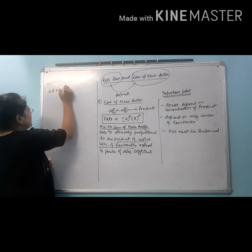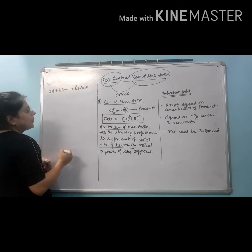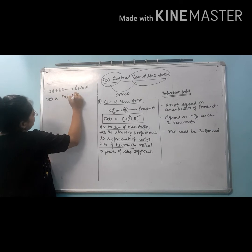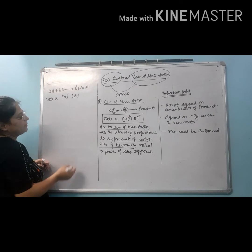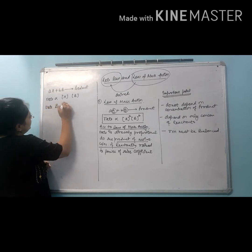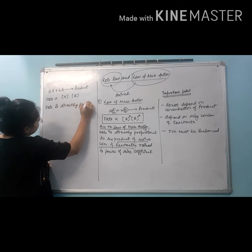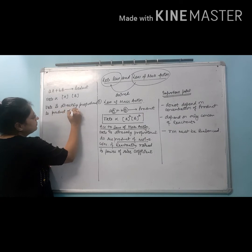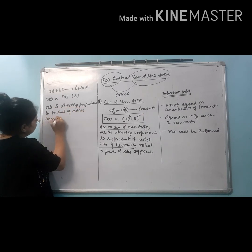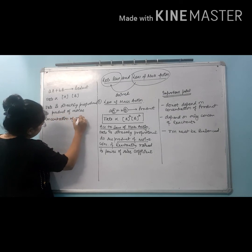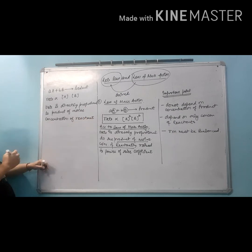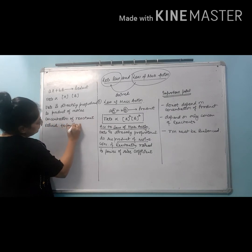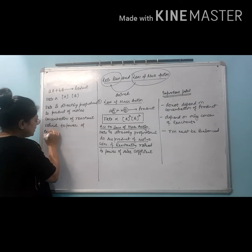Now rate law says: for A plus B gives product, rate is directly proportional to A raised to power a into B raised to power b. So the definition is: rate is directly proportional to product of molar concentration of reactants, raised to the power of experimental coefficients.